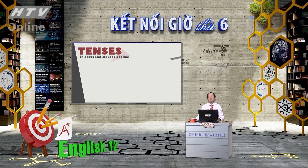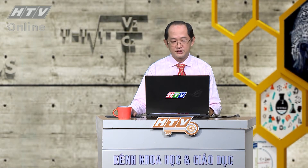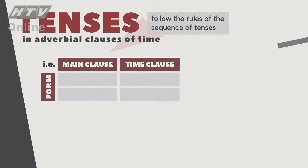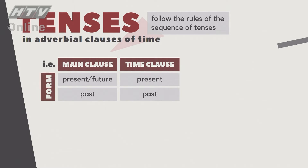Khi làm câu với adverbial clauses of time, chúng ta lưu ý cách chia thì theo quy tắc sequence of tenses. Một câu có mệnh đề chỉ thời gian gồm hai phần: main clause (mệnh đề chính) và time clause (mệnh đề phụ). Khi mệnh đề chính ở present hoặc future, mệnh đề phụ dùng present. Nếu mệnh đề chính ở past thì mệnh đề phụ cũng ở past tenses.